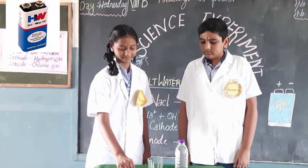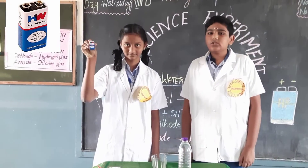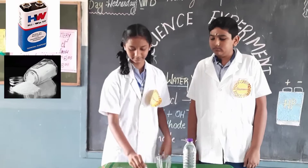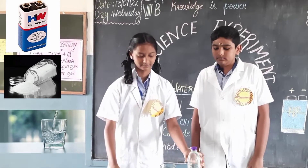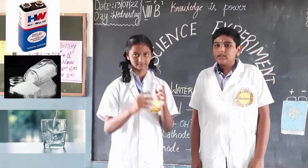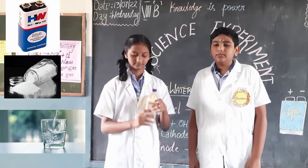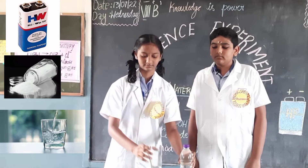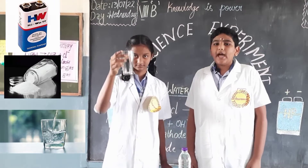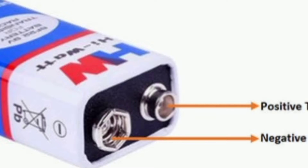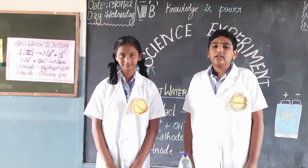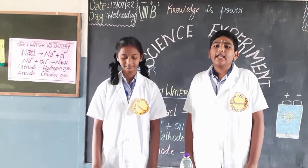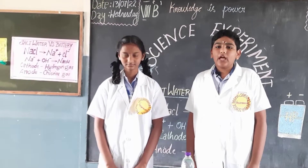Battery, salt, water, and a glass jar. The battery contains two electrodes — positive and negative. The positive electrode is called the anode and the negative electrode is called the cathode.